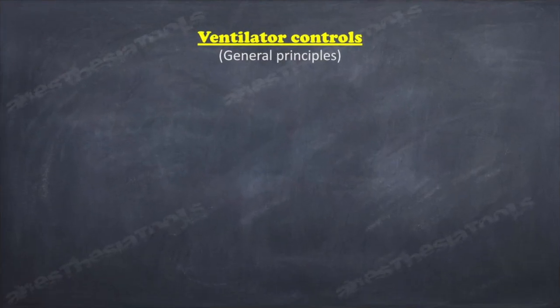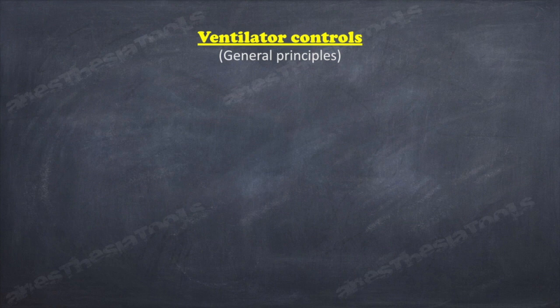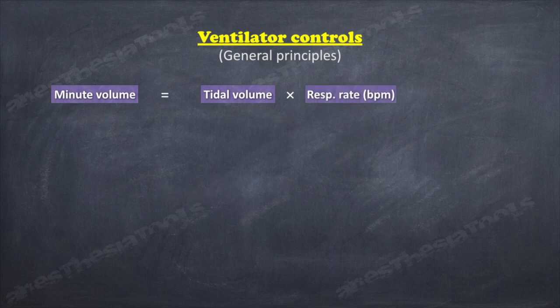Now some general principles on how to set a ventilator. The three variables involved in ventilatory parameters are traditionally arranged in the simple equation: minute volume equals tidal volume times rate, that is breaths per minute. Armed with this equation, a user should be able to switch on and set up any ventilator in its basic mode.